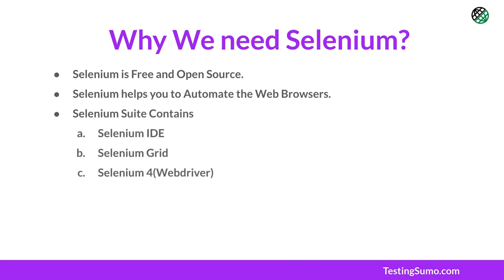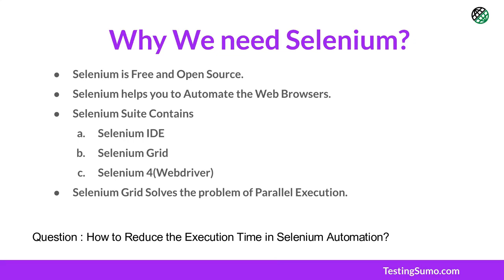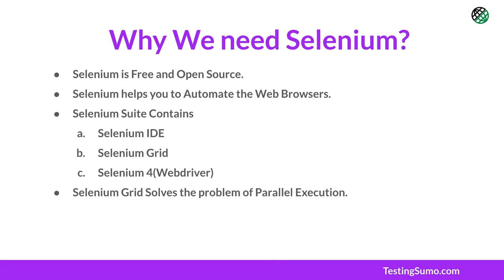Selenium Grid solves the problem of parallel execution, which is most important. It also helps reduce your test execution time. For example, if you have 5,000 automated test cases running on a single computer taking one hour, how do you cut that to 30 minutes? The answer is setting up a Grid mechanism — it can be on AWS, local, or Docker-based.